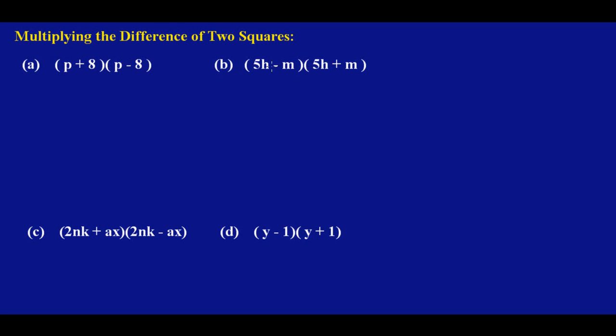If you look at it carefully, likewise in this bracket there's 5h minus m, and over here I have 5h plus m. So when we're speaking about a difference of two squares, you're multiplying the same thing by itself. The only difference is that in one bracket there is a plus sign and in the next there is a minus sign.